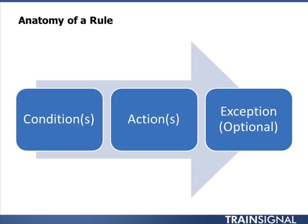DLP policies are separate from rules, and they fall under the compliance management feature, as opposed to rules which fall under the mail flow feature. But ultimately, the DLP policies create rules — we might call them special transport rules — and their purpose is to check inside emails and classify information within as sensitive or non-sensitive in nature. All of this is based on keywords, dictionaries, and known patterns for things like credit card numbers, social security numbers, and more.